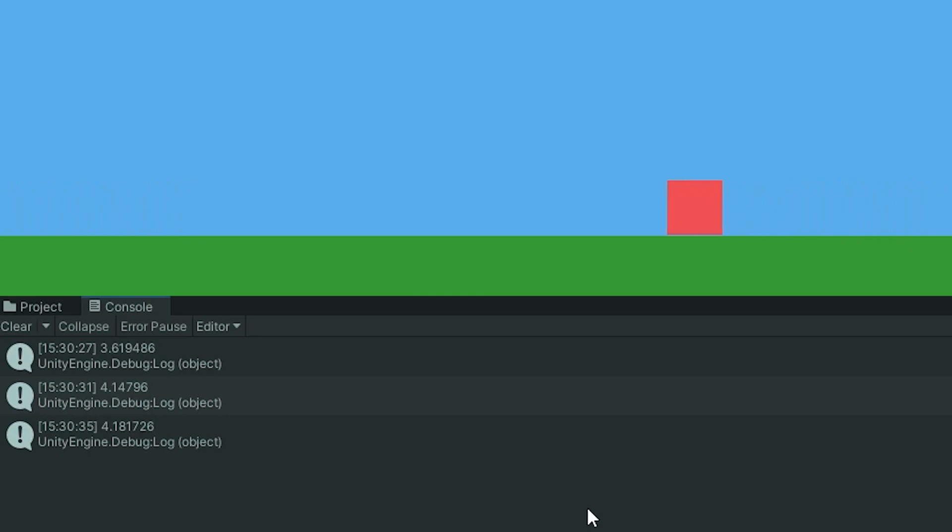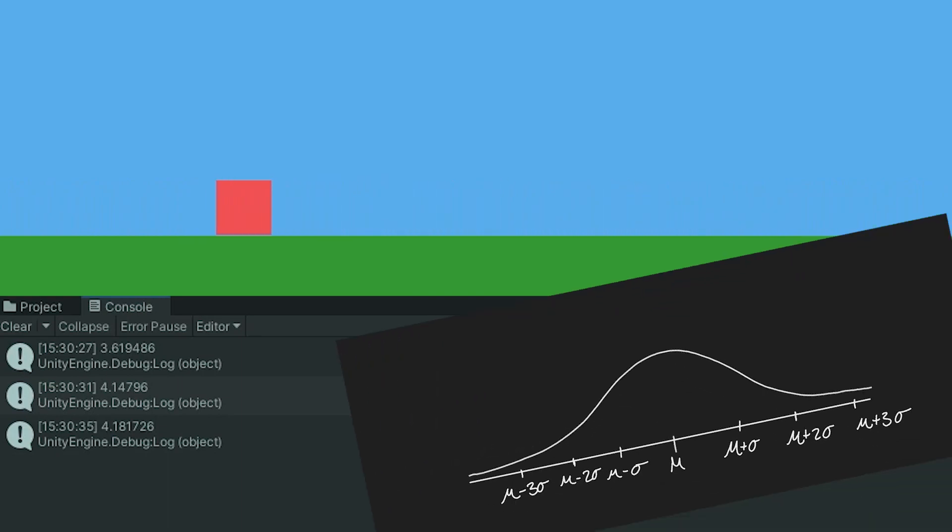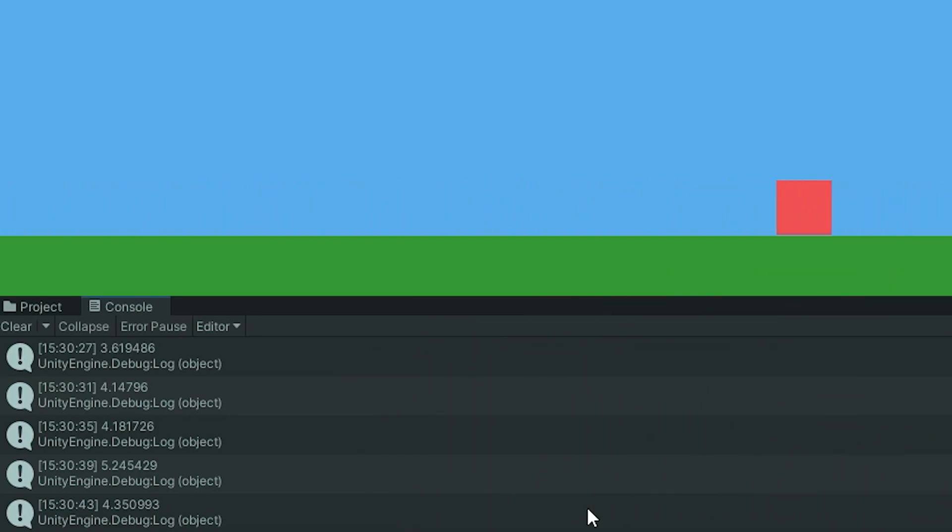Now there's one more thing I quickly want to mention in this section. And that is in the super unlikely event, the normal distribution can go so far to the left, that it'll output a negative number, which in this case means the enemy would move in the opposite direction. We can remedy this by clamping the output of the function.